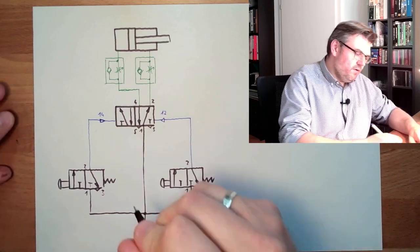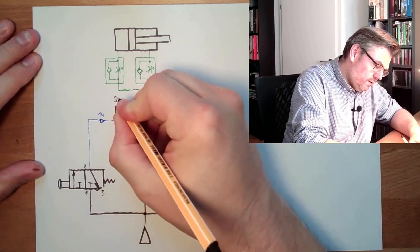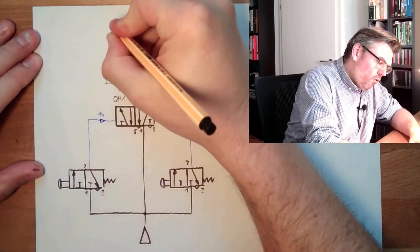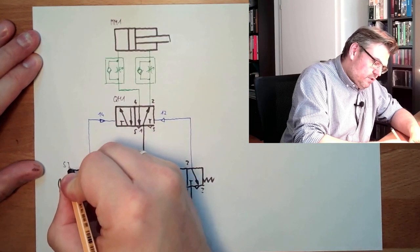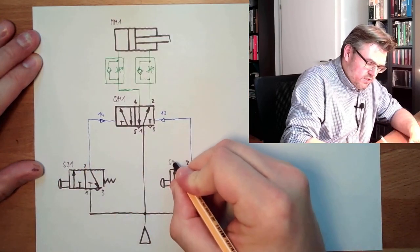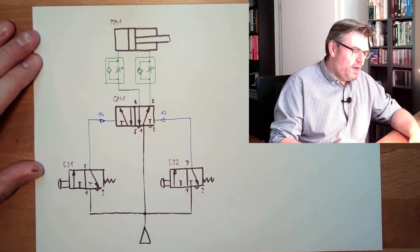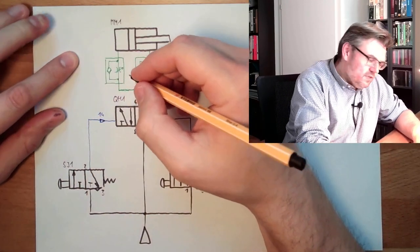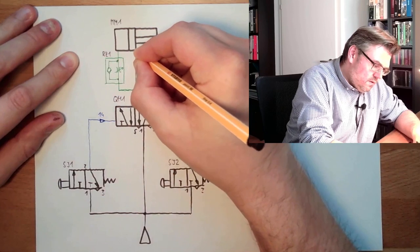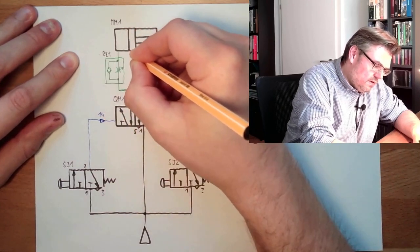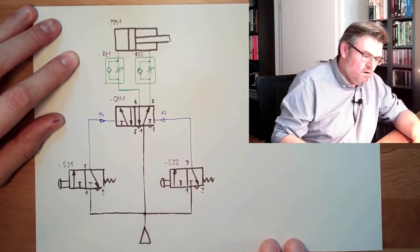So this here, we have again the QM1, control element, QM1 controlling our MM1. Here we have an SJ1, here we have an SJ2, the two switches. And then we have here, these are RSets, RSets 1, RSets 2. These are the namings of those cylinders.